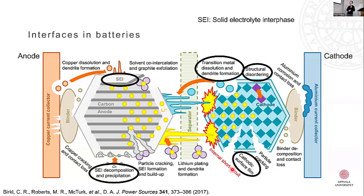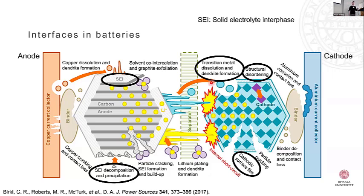There are a lot of reactions and mechanisms that can occur towards aging of batteries. One example is SEI decomposition — where there may be some break-up or dissolution of the SEI back into the electrolyte, leading to an aging mechanism. On the cathode side, you might have some transition metal dissolution leading to capacity fading, or some structural disordering which limits the amount of lithium you can store in the cathode material. So there's a lot going on, a lot of different materials and interfaces between the different components of the battery.